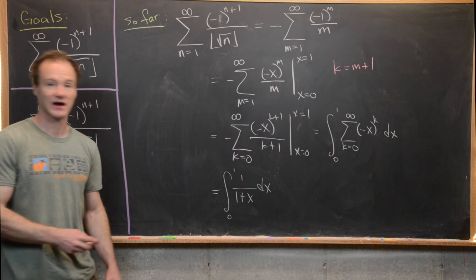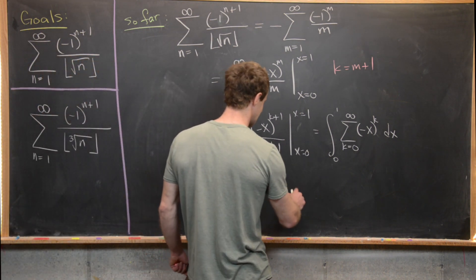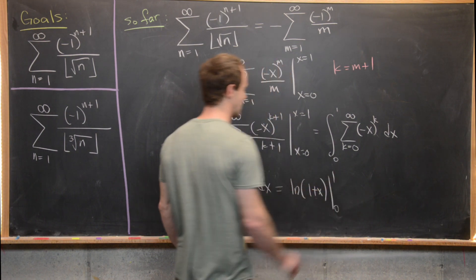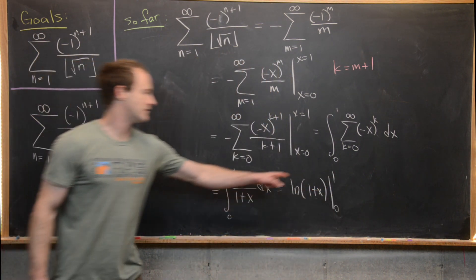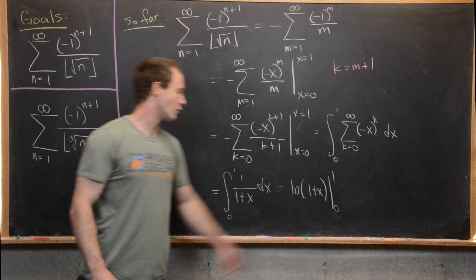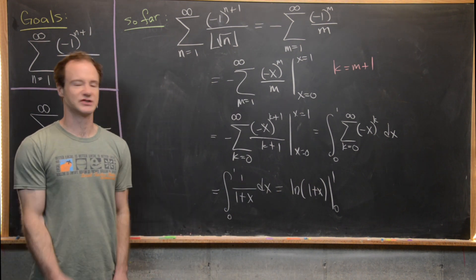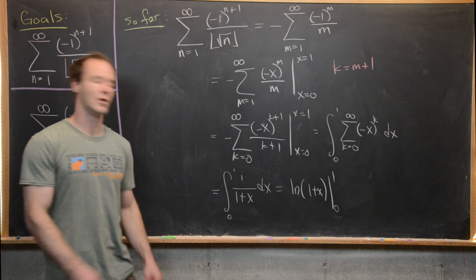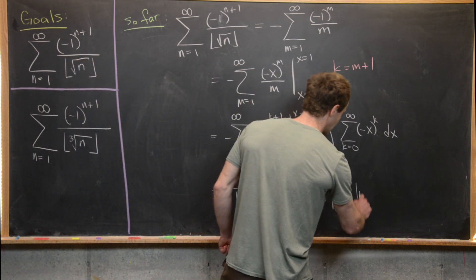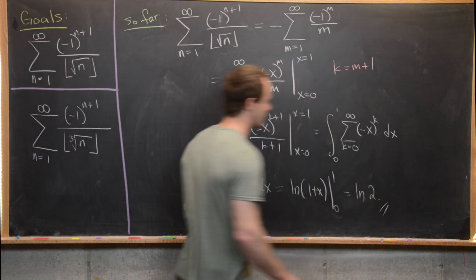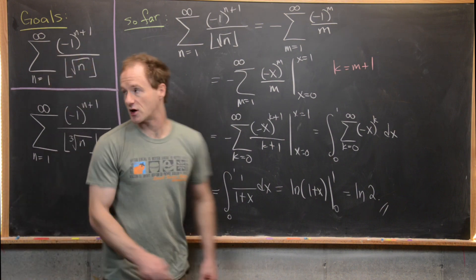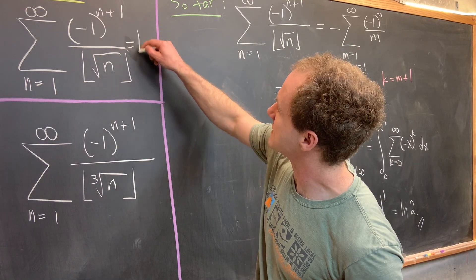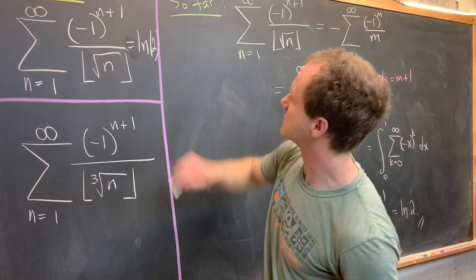The antiderivative is the natural log of 1 plus x, evaluated from 0 to 1. Evaluating at 1 gives the natural log of 2; evaluating at 0 gives the natural log of 1, which is 0. So in the end we get the natural log of 2, and our first goal sum equals ln(2).